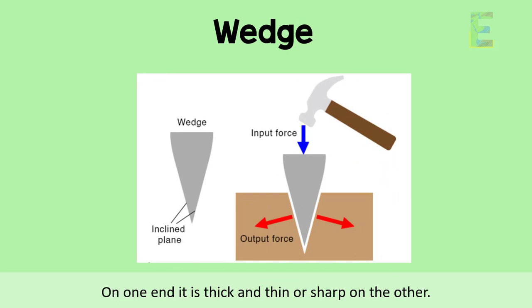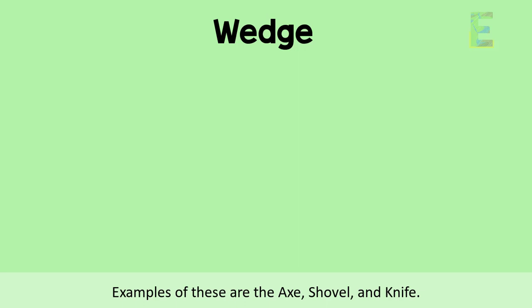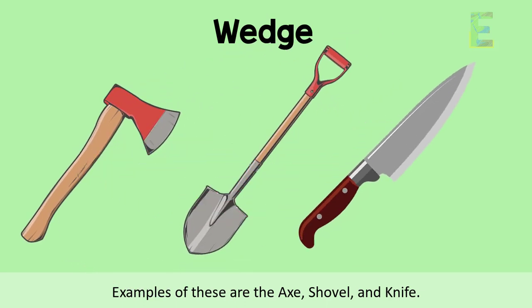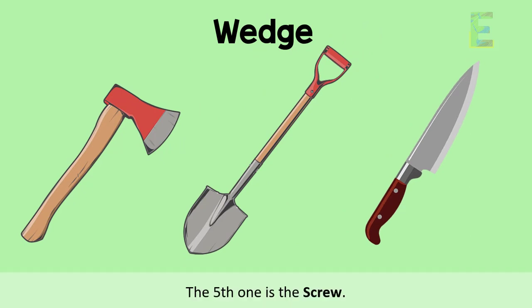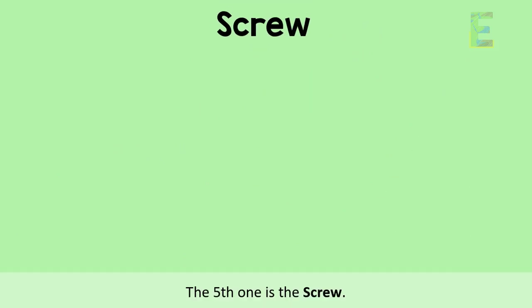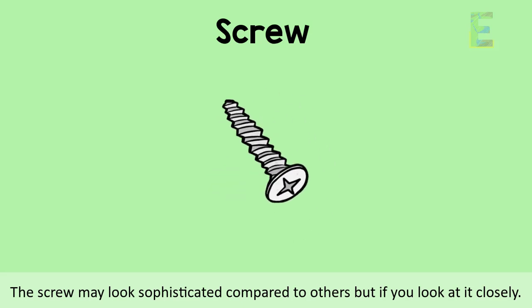Next to it is the wedge. A wedge is basically a triangular shaped object. On one end it is thick and thin or sharp on the other. It is used to split things into pieces. Examples of this are the axe, shovel, and knife.